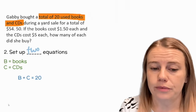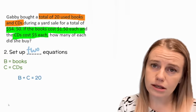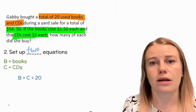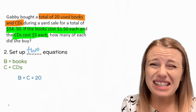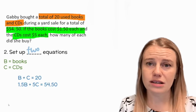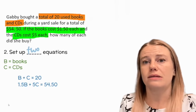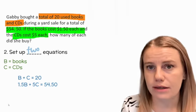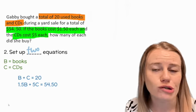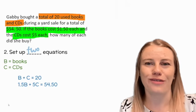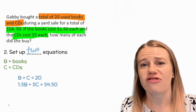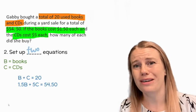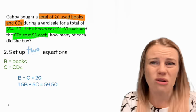Next, we were told that the books cost $1.50 each and the CDs cost $5 each, and the total was $54.50. So our second equation is the cost of the books times how many she bought plus the cost of the CDs times how many she bought equals the total amount. That's how it's calculated at the grocery store—if you've bought five packs of gum, you multiply that by the cost, and if you bought two sodas, you multiply that by the cost, then add them together.